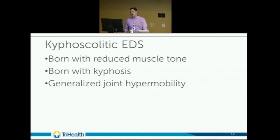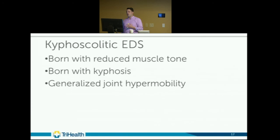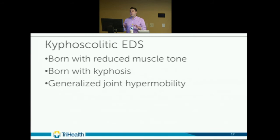Kyphoscoliotic EDS: patients are born with reduced muscle tone and most likely kyphosis of the upper spine, along with generalized joint hypermobility. There are two genetic mutations: the PLOD1 mutation causes abnormal spine curvature at birth, reduced muscle tone, and joint hypermobility; the FKBP14 mutation causes kyphoscoliosis, severe reduced muscle tone and atrophy at birth, joint hypermobility, possible congenital hearing loss, and chronic pain and disability. Genetic testing helps discern which form is present.